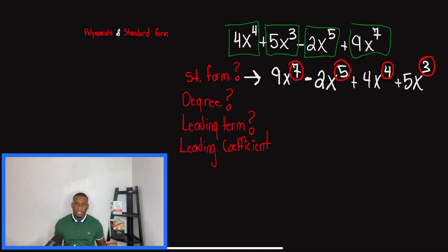OK, now we're talking about degree. Understand, guys, that degree, they're just asking you, hey, what is the highest exponent? What's the highest exponent in the problem? So in our problem, the highest exponent is seven. So if they're asking us for our degree or the degree of the polynomial, all we would put is seven.